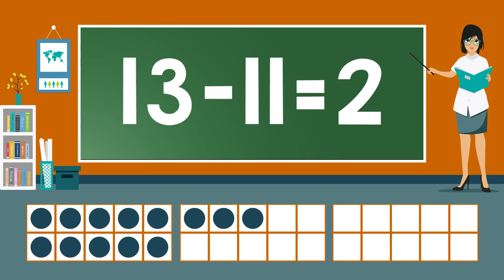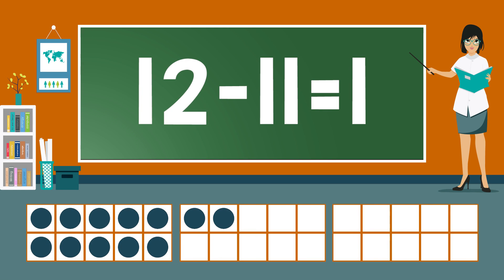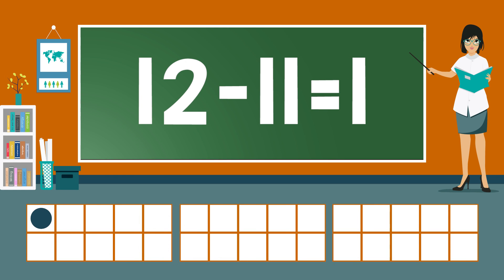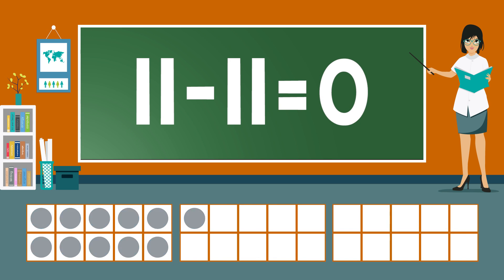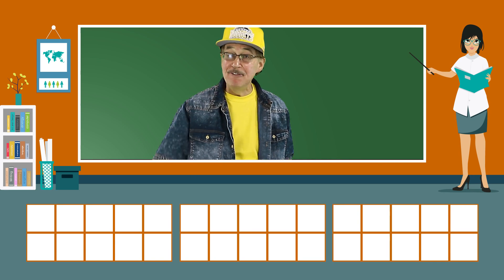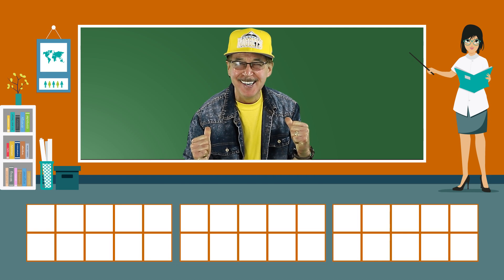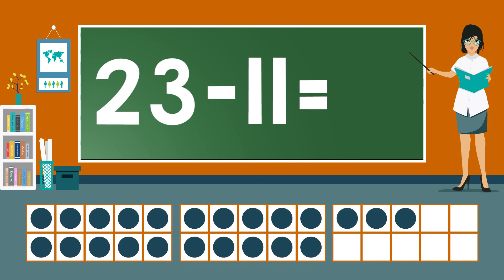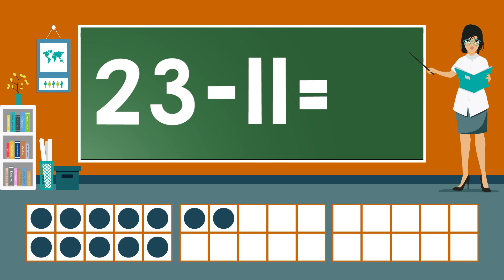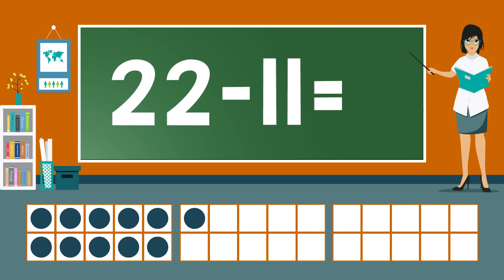13 minus 11 equals 2. 12 minus 11 equals 1. 11 minus 11 equals 0. Now practice our subtraction facts — now you answer before me. 23 minus 11 equals... 22 minus 11 equals...